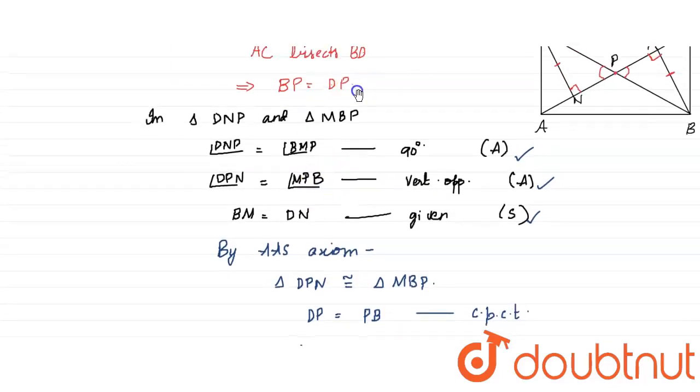So what we have to prove? We have to prove that BP equals DP, and that is what we proved: DP equals PB. And that is by CPCT. CPCT means corresponding parts of congruent triangles. If two triangles are congruent, the corresponding parts automatically become equal.